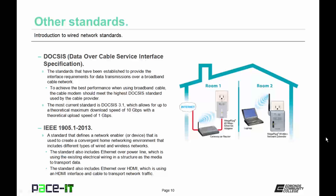Then there's the IEEE 1905.1-2013 standard. This defines a network enabler or device used to create a convergent home networking environment that includes different types of wired and wireless networks. The standard also includes Ethernet over power line — using existing electrical wiring in a structure as the media to transport data — as well as Ethernet over HDMI, which uses an HDMI interface and cable to transport network traffic.